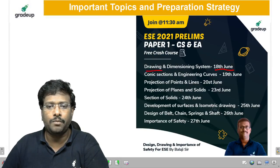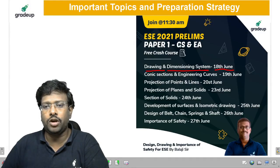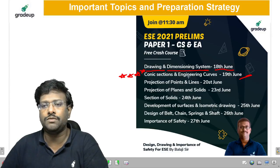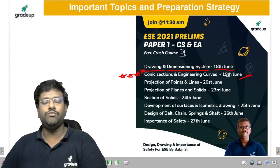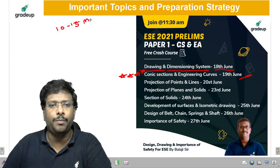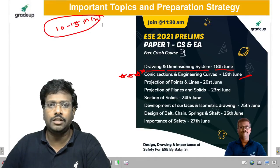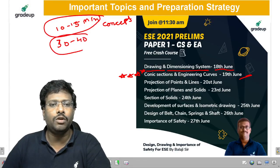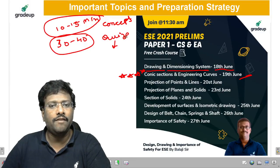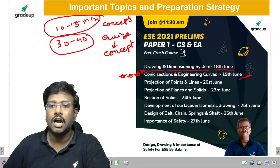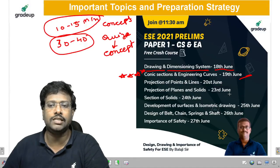I am going to discuss all these elements in upcoming sessions on the YouTube channel. On 18th June, I will cover important elements in introduction to drawing and dimensioning systems. On 19th June — very important — conic sections and engineering curves, from which many questions can be expected. Each session will be 10 to 15 minutes of concepts followed by 30 to 40 minutes of quiz, during which I will also explain concepts. On 20th June, I will discuss projection of points and lines along with classification of projections.